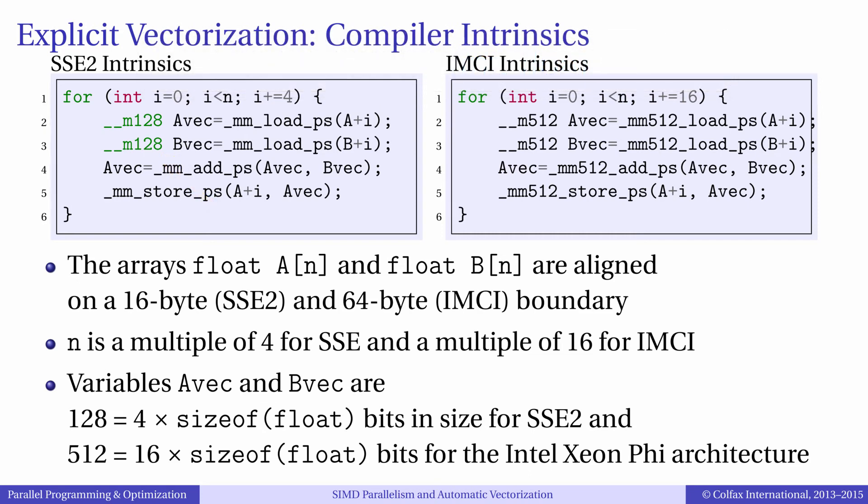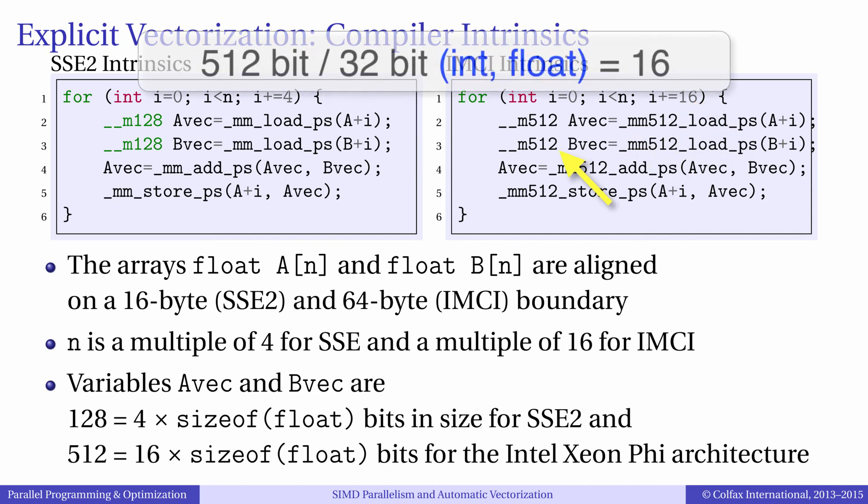The listing on the right performs the same calculation but this time using IMCI instructions of Intel Xeon Phi coprocessors. The workflow here is similar, however the stride is equal to 16 because Intel Xeon Phi coprocessor vector registers are 512-bit wide. So this code calls four times fewer vector instructions.